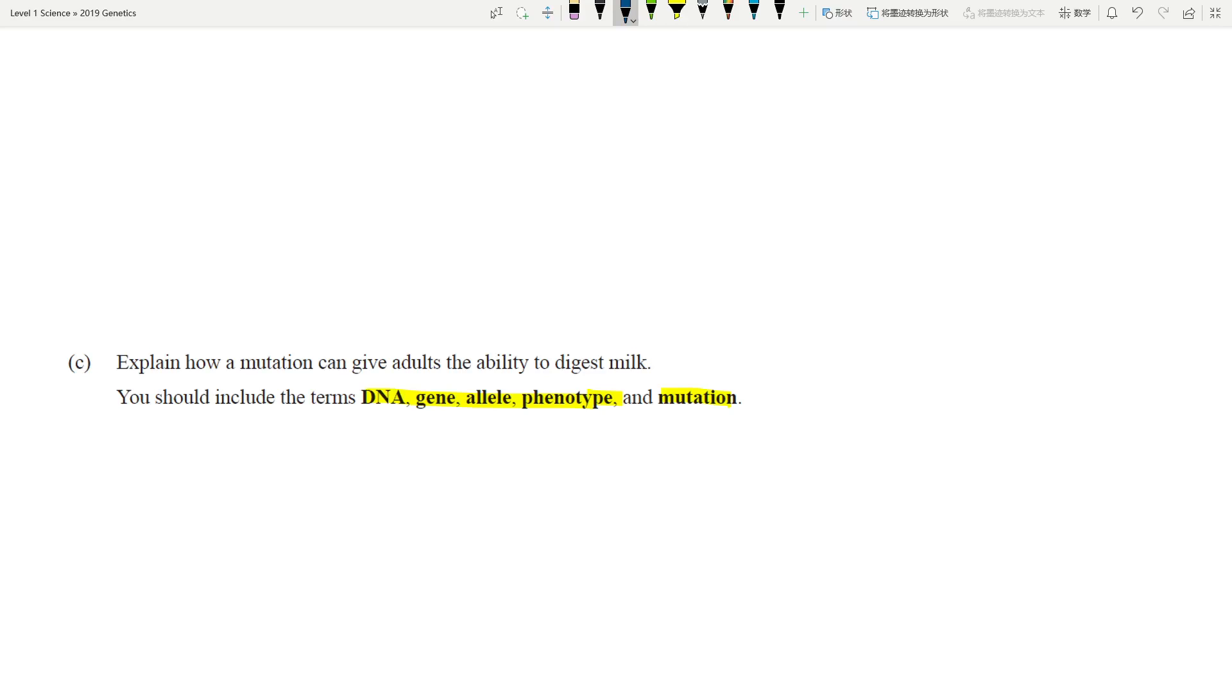Let's not get too sidetracked. Include the terms DNA, gene, allele, phenotype, mutation. We're looking at how a mutation gives adults the ability to digest milk. If you think about it, most adults couldn't digest milk before.